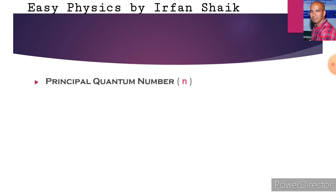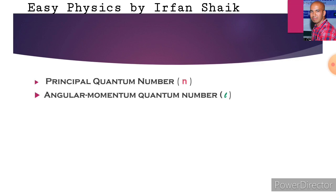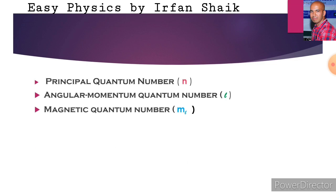The principal quantum number is denoted by small n. The second one is angular momentum quantum number, which can also be called as azimuthal quantum number. The third one is magnetic quantum number. The last one is spin quantum number. In this class we are going to discuss about these four quantum numbers.